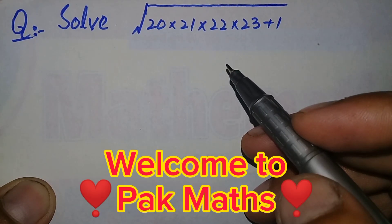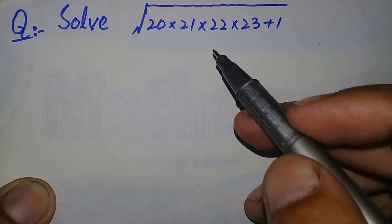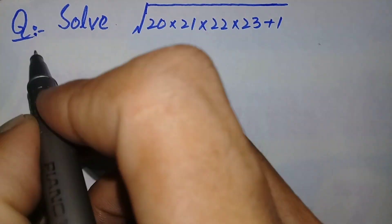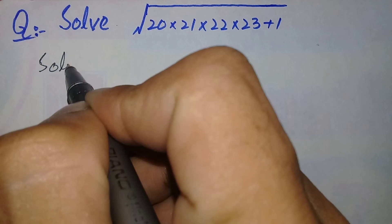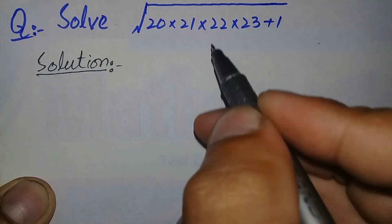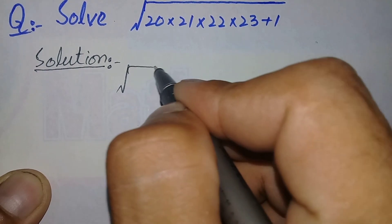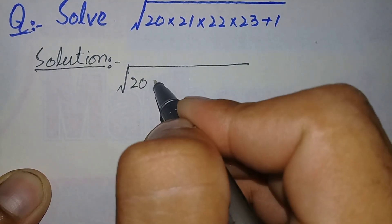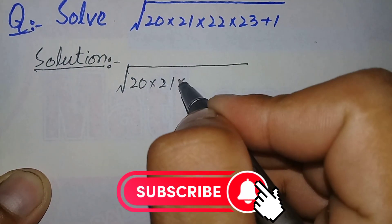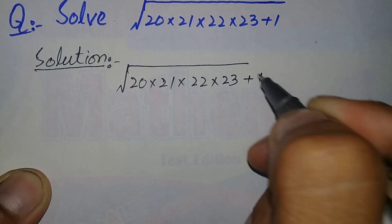Hello, welcome to ParkMas. In this video we will learn how to solve this viral math Olympiad question. Let's start. First of all we will write the solution and rewrite this question: square root of 20 multiplied by 21 multiplied by 22 multiplied by 23, plus 1.